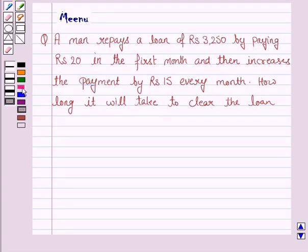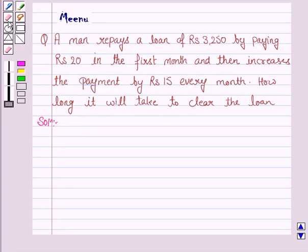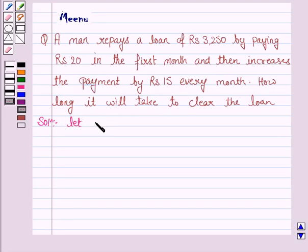So let's now move on to the solution. We have to find the number of months in which the loan gets cleared. So let the loan be cleared in N months.